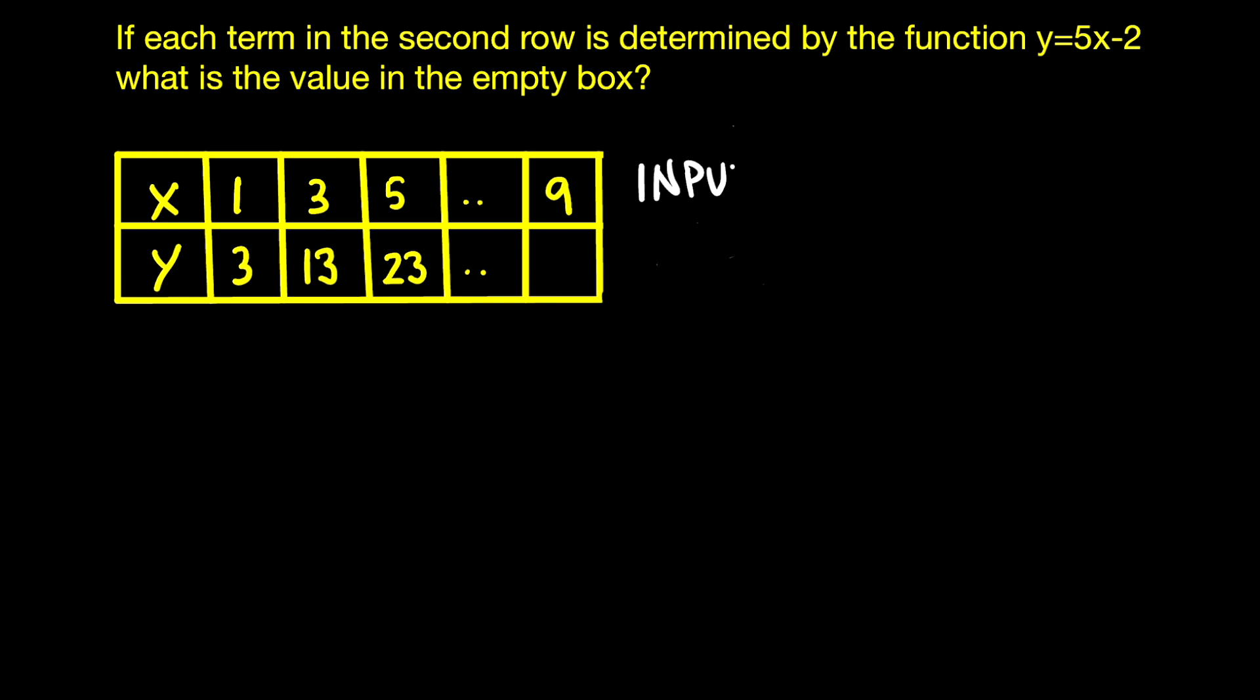So here what you have to remember is that when they give you this sort of function, you have an input-output system. And what that means is that whatever x value you input into this equation that they have given you, whatever value from that first row you input, you're going to get a y value in the second row.